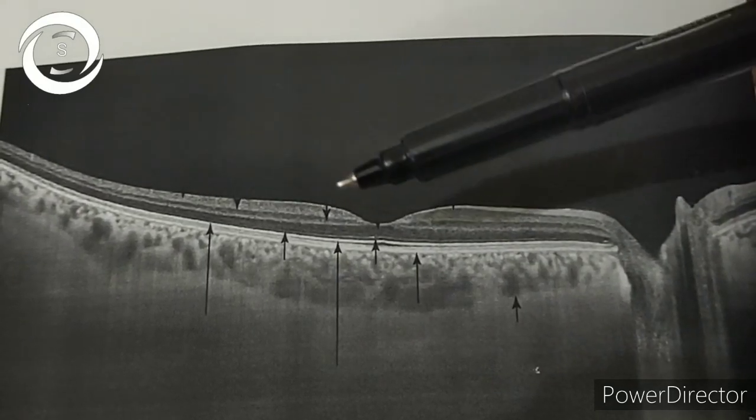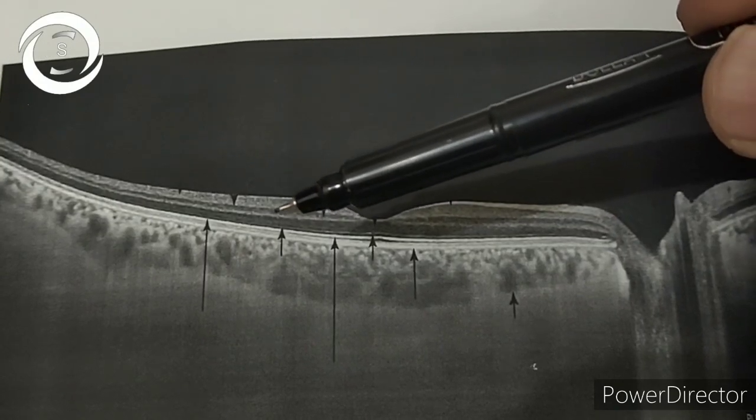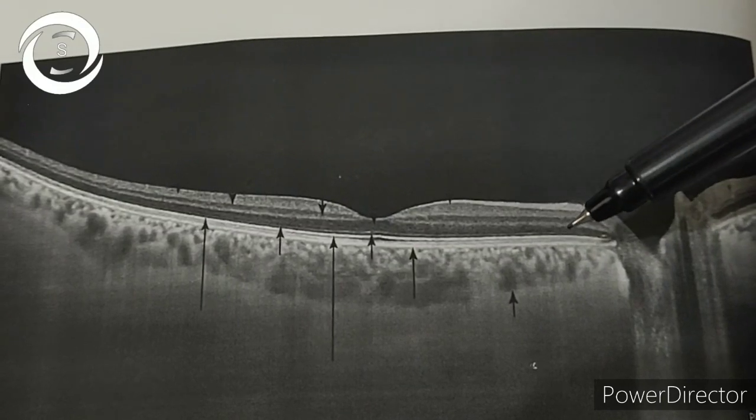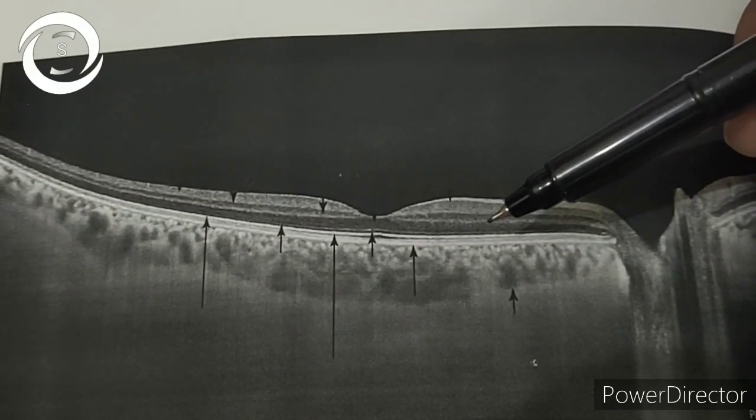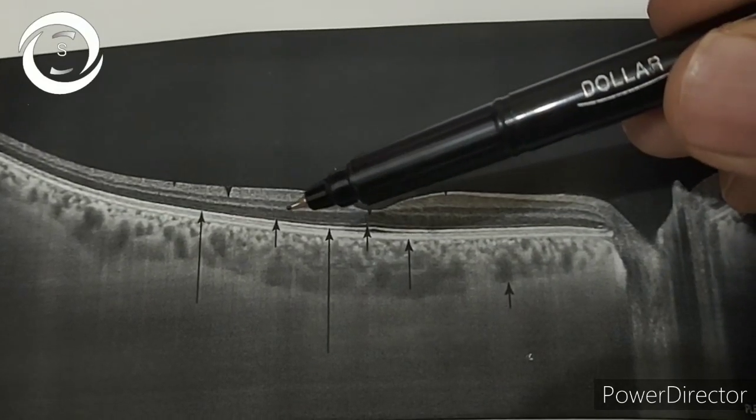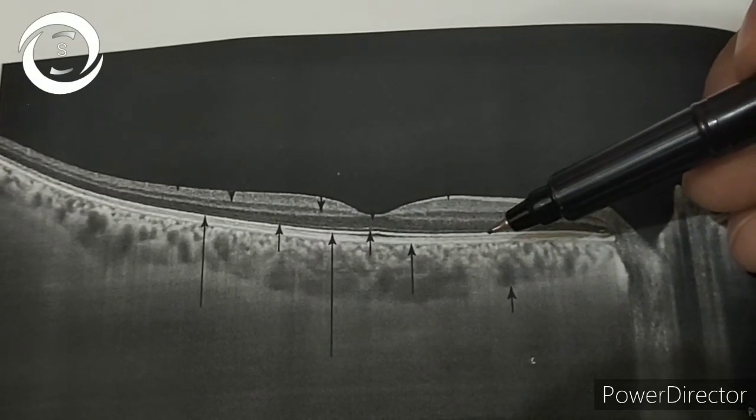Beneath the internal limiting membrane, the hypo-reflective layer in this swept source OCT is the ganglion cell layer. Then the more hyper-reflective layer is inner plexiform layer. Underneath it is hypo-reflective inner nuclear layer, then the outer plexiform layer.